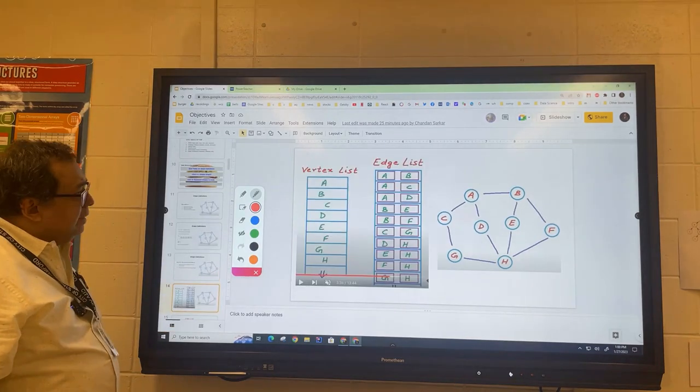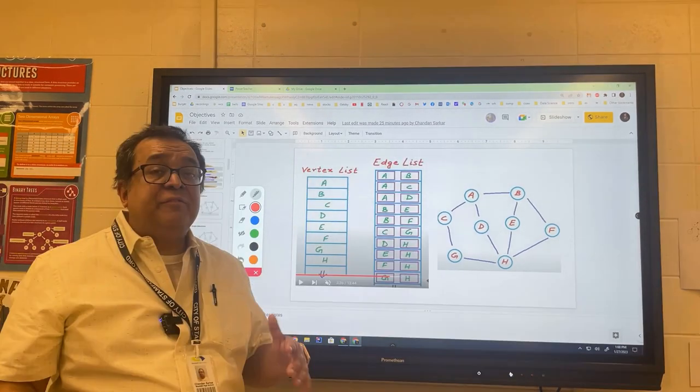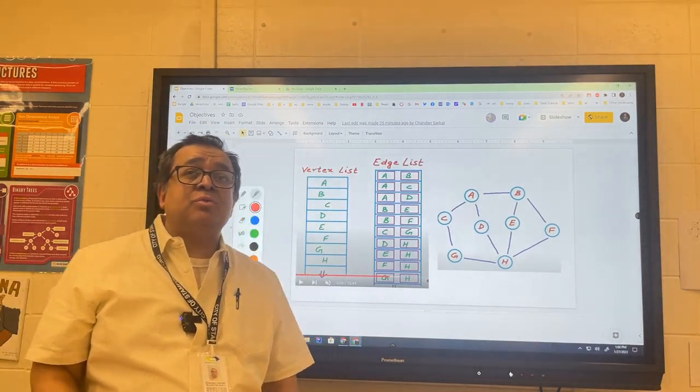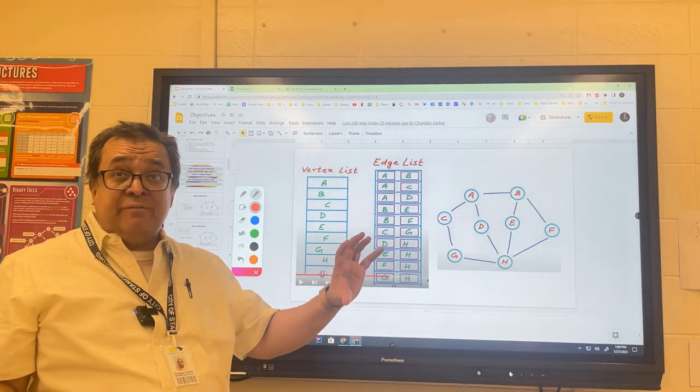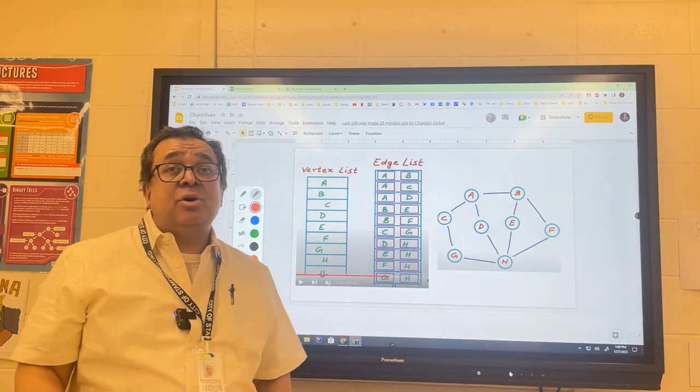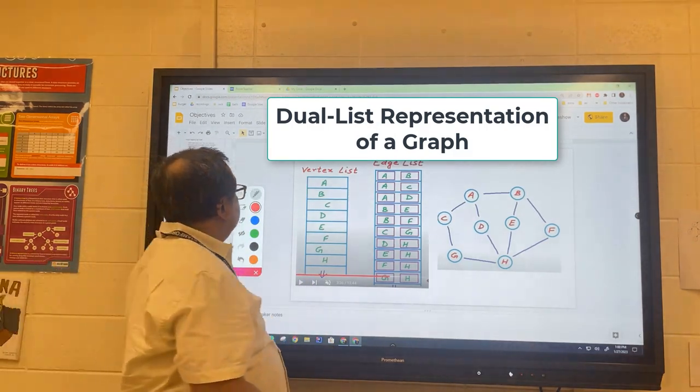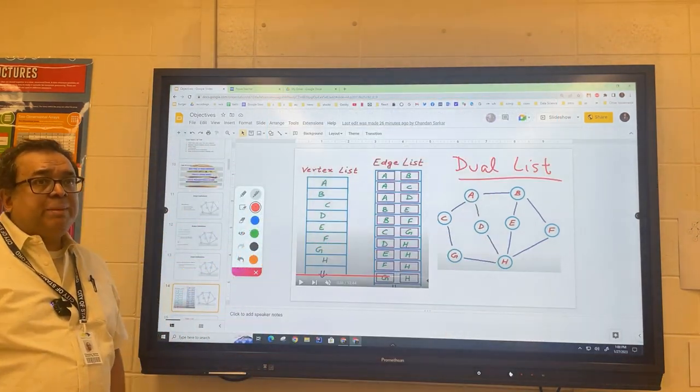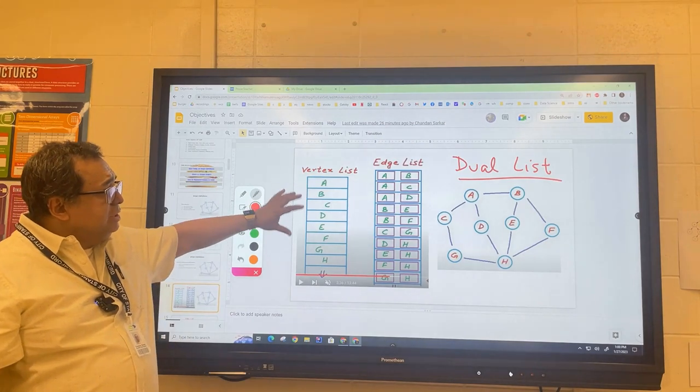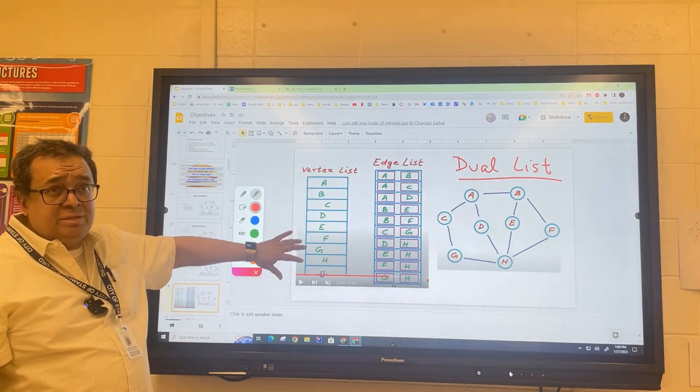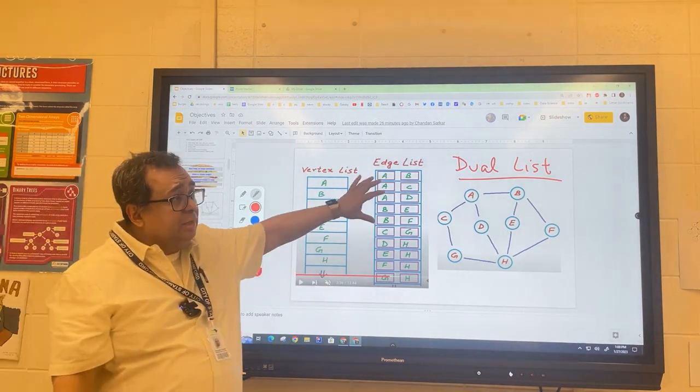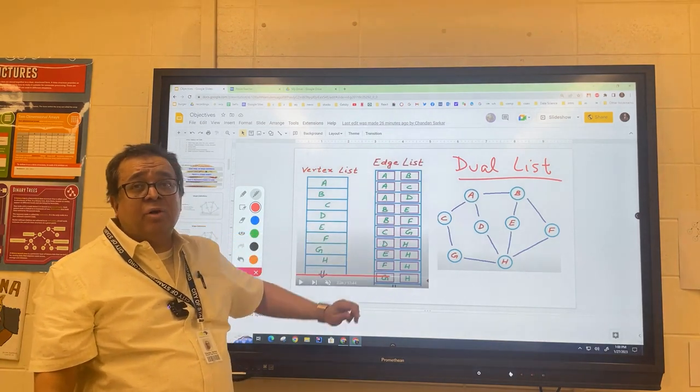So here is a simple graph. The first algorithm we're going to describe for storing the graph in our code is called a dual list approach. Let me write that down for you. We're going to keep one list which contains the names of our vertices and we're going to keep another list that contains a list of all of our edges.